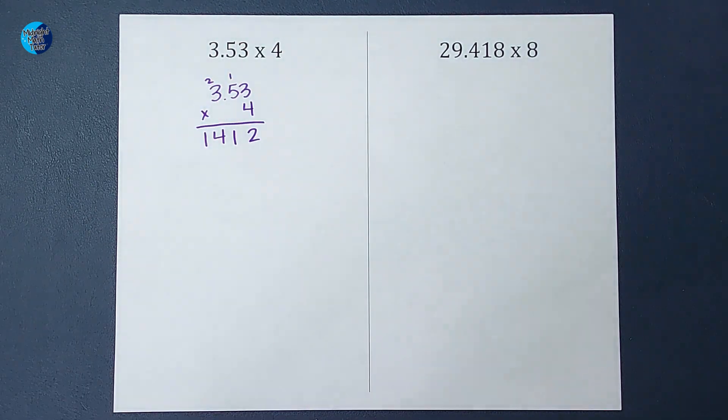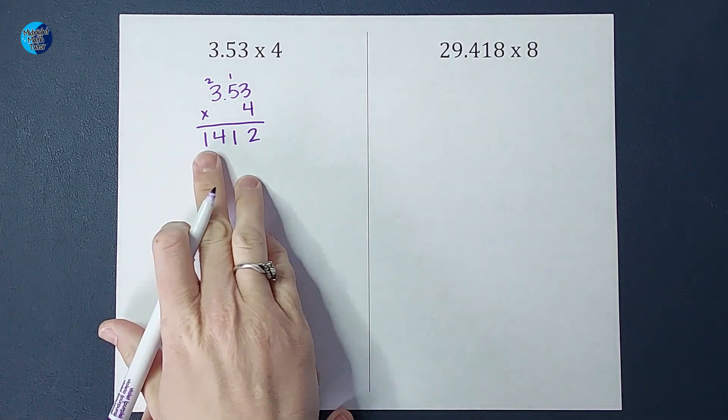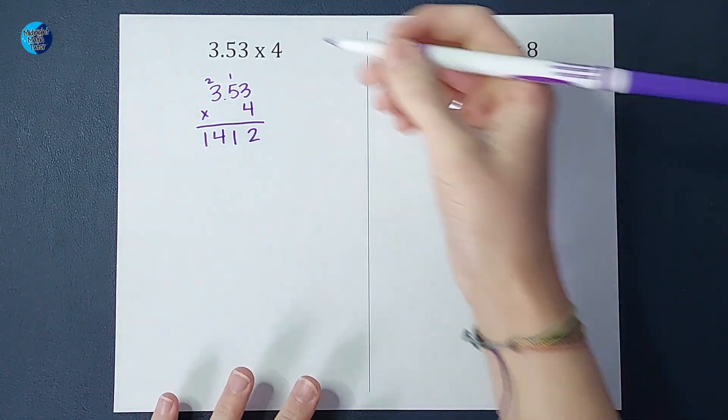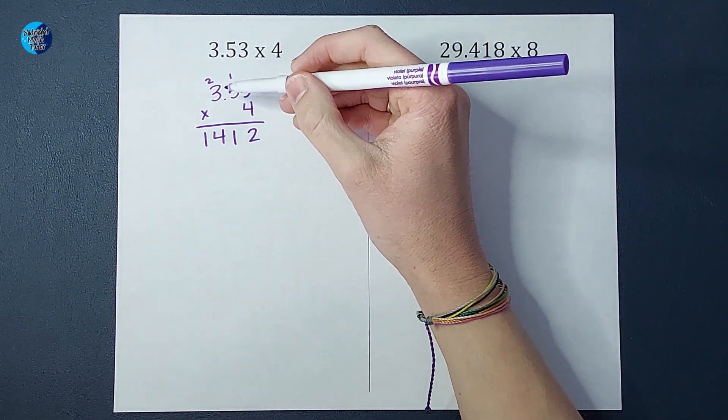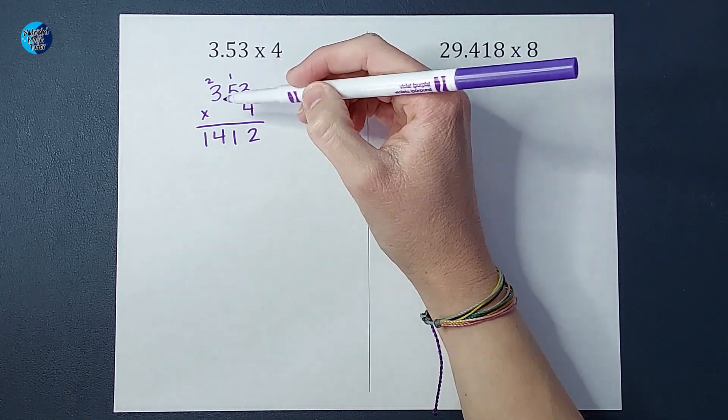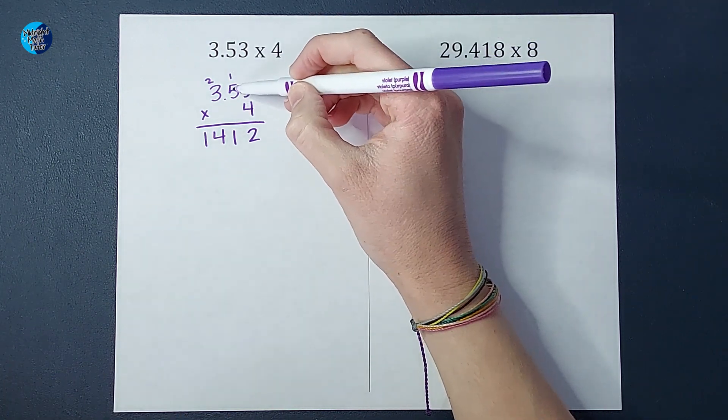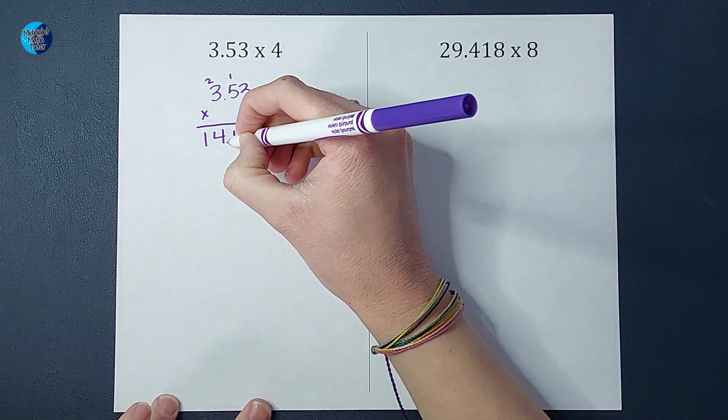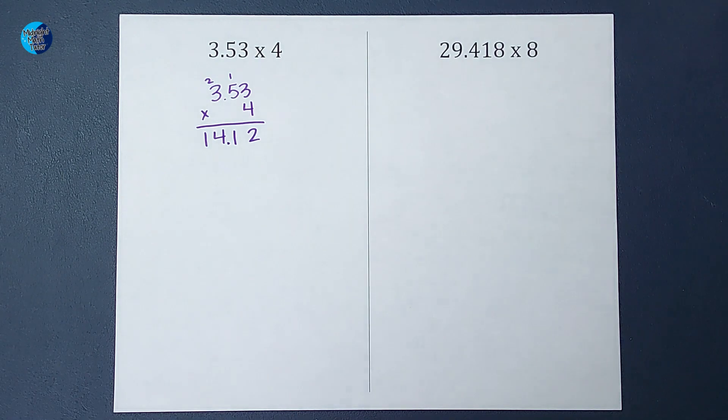So I've basically ignored the decimal point up until now, and now is when I need to pay attention to it again. So how do I figure out where it goes on here? Well, you find your decimal on top and count how many numbers are behind it. So here I have two numbers behind it, so I keep this down here with two numbers behind it just like that.